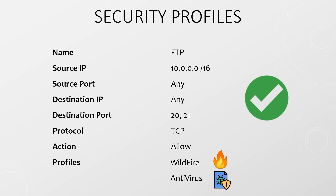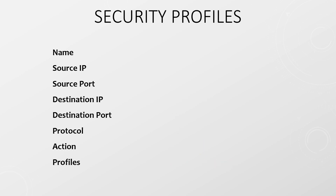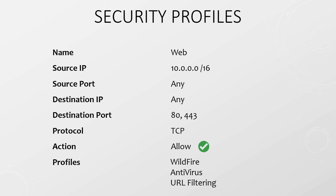We can also use these profiles for data loss prevention and for Wildfire. For example, we may have a security policy that allows some web browsing traffic and blocks others. We wouldn't apply any security profiles to the rule that drops traffic. However, on the rule that allows traffic, we might apply anti-virus, anti-spyware, and URL filtering profiles. While the rule allows web browsing, these profiles look at things like whether the URL is safe and suitable for work, and whether any files that are downloaded are malicious. If there's a threat, the security profile can drop the traffic.